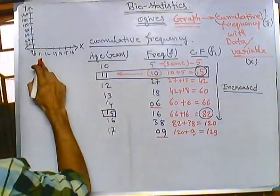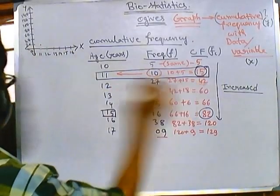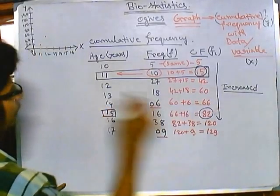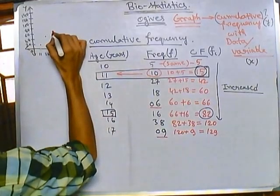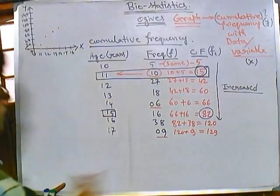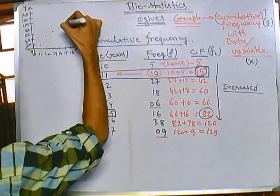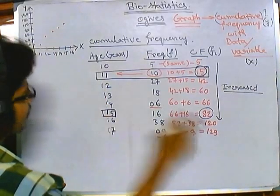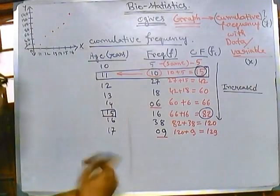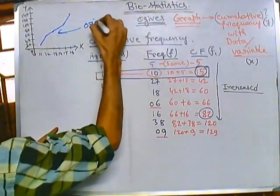Now let's plot the data points. Age 11 has cumulative frequency 15, so we plot that point. Age 12 has cumulative frequency 42. Age 13 has cumulative frequency 60 — exactly at 60. Age 14 has cumulative frequency 66. Age 15 has cumulative frequency 82. Age 16 has cumulative frequency 120. Joining all these points gives us a curve — this is the ogive.